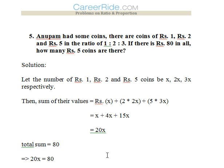Now we have assumed that rupee 1, rupee 2, and rupee 5 coins be x, 2x, and 3x respectively, just because the ratio of the number of coins is 1 is to 2 is to 3. So the number of coins we have assumed as x, 2x, and 3x for 1, 2, and 5 rupee denomination coins.